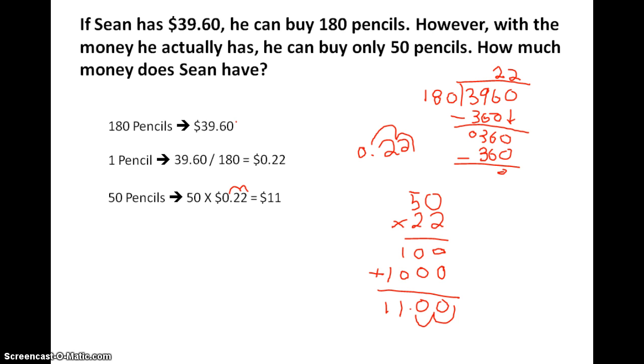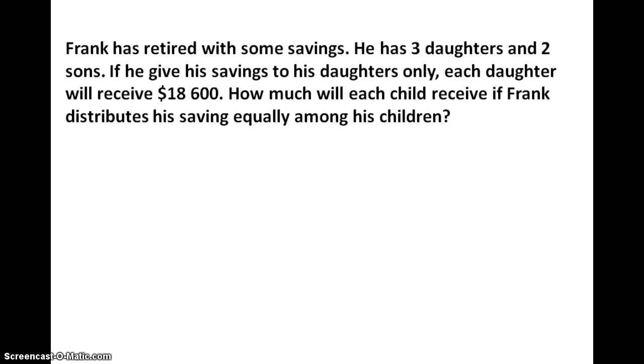Alright. Let's go to the next question. Frank has retired with some savings. He has 3 daughters and 2 sons. If he gives his savings to his daughters only, each daughter will receive $18,600. How much will each child receive if Frank distributes his savings equally among his children?